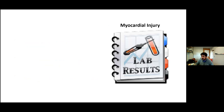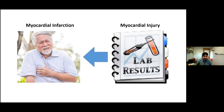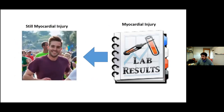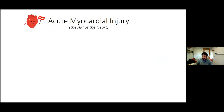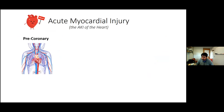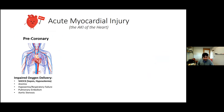The recap: you see myocardial injury — if the patient has chest pain, call it myocardial infarction and go down the ACS pathway. But if they don't look like an ACS patient, that's still myocardial injury. Acute myocardial injury is the AKI of the heart. Using an anatomic framework: pre-coronary causes involve impaired oxygen delivery before reaching the coronary artery — hypovolemic shock, hypoxemia, respiratory failure, pulmonary embolism, aortic stenosis. These are all pre-coronary etiologies of elevated troponin.